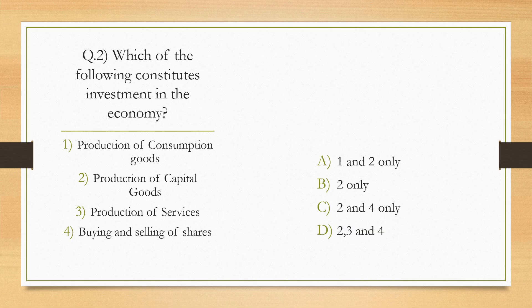Which of the following constitutes investment in the economy? Options: production of consumption goods, production of capital goods, production of services, buying and selling of shares. Options are: 1 and 2 only, 2 only, 2 and 4 only, 2, 3 and 4. The correct answer is B — 2 only, production of capital goods.